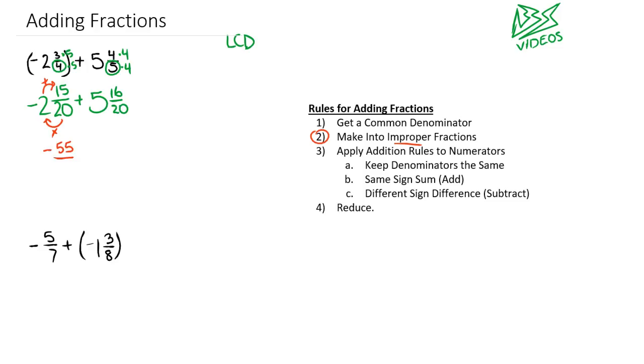We have negative 55 twentieths, plus 20 times 5 is 100, and 100 plus 16 is 116 twentieths. Now we can apply the addition rules. If we have the same sign, we find the sum.